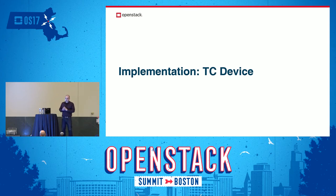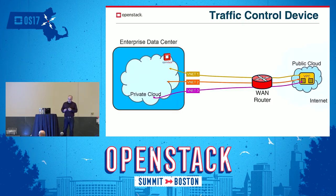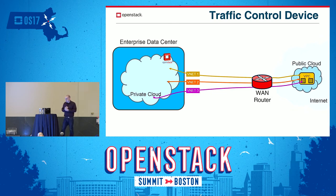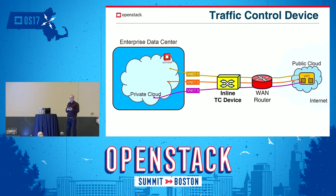Now I'll explain about our implementation for a traffic control device and service in Neutron. The traffic control device — we didn't build a device, it's just software, a reference implementation. Where do we put it? In this simplified figure, we see some private cloud with three virtual networks. Let's assume even different projects. All these virtual networks eventually go through a WAN gateway, a WAN router. The TC is an inline device — it should be placed somewhere between the connectivity from the cloud and the WAN router.